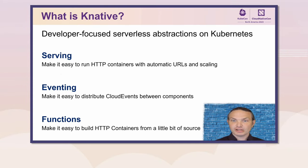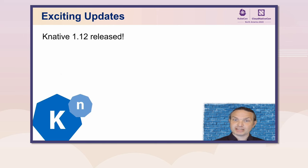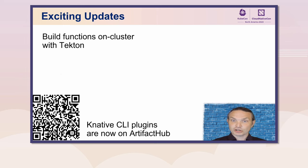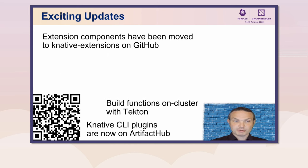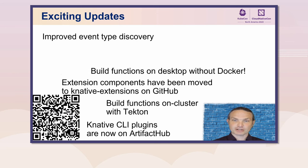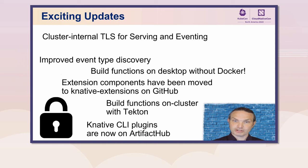Hello KubeCon CloudNativeCon Chicago. This is Evan Anderson with the Knative project with some updates. For those who don't recall where Knative sits on the CNCF landscape, it provides developer-focused serverless abstractions that are modular so you can pick and choose the pieces you want. We've had three releases since the last update, so I've got a whole bunch of highlights. All the CLI plugins are now released on Artifact Hub, with other components coming shortly. You can now build functions on cluster using Tekton. All the extension components have been moved to the Knative Extensions GitHub org. You can build functions on your desktop without needing Docker installed. We've also improved event type discovery on cluster and secured communications for serving and eventing.